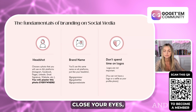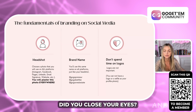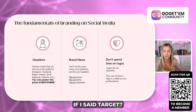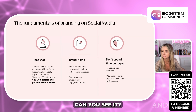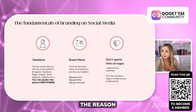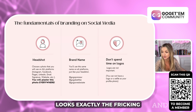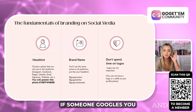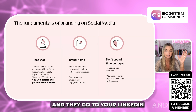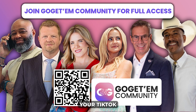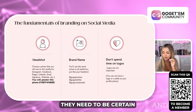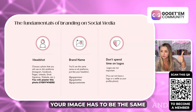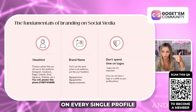Close your eyes and imagine the Home Depot logo — can you see it? If I said Starbucks, can you see it? Target? Best Buy? That's brand recognition. The reason you can visualize those is because Best Buy looks exactly the same in Alabama as it does in Kentucky. That's what you want to achieve. If someone Googles you and goes to your LinkedIn, your .com, your Facebook, Instagram, TikTok, or YouTube, they need to be certain they are on the same page. In order for them to be certain, your image has to be the same on every single profile.